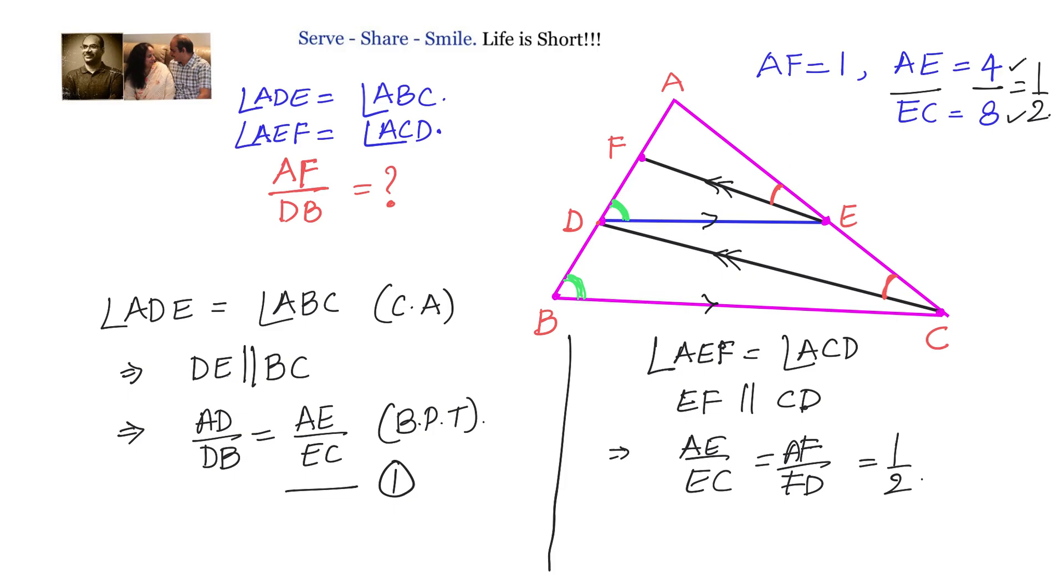What we need to find out is AF divided by DB. We have here AF by FD equals 1 by 2. What we need to find is AF divided by DB. Now what we will do is reverse this, add 1, and reverse again. Then we will get AF divided by AD equals 1 by 3. This is our equation number 2.